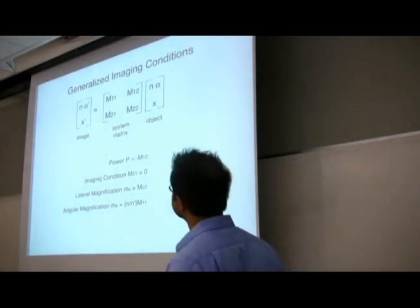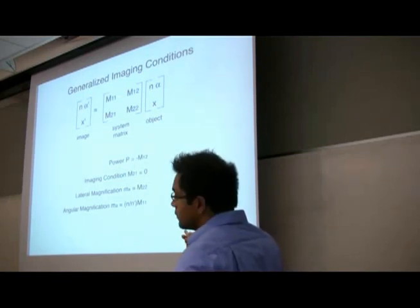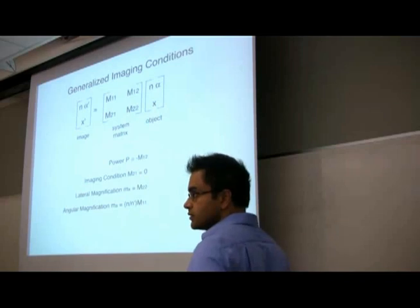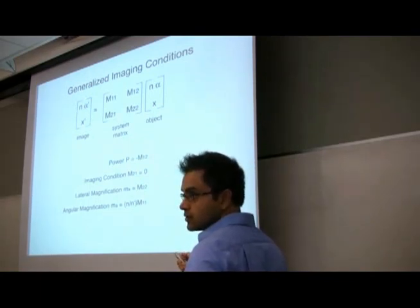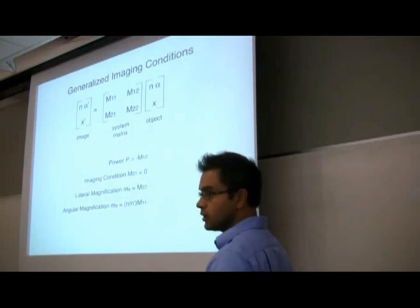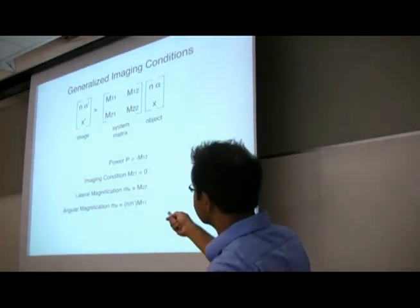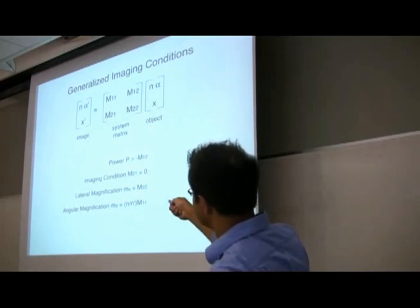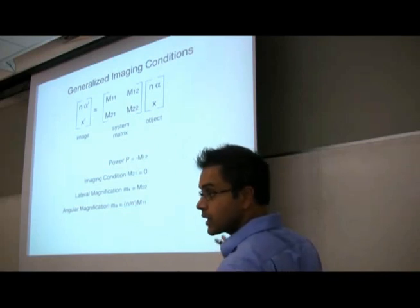To summarize matrix optics: we have the generalized imaging condition and we defined the optical transformation that happens to rays with a simple 2×2 matrix. The image and the object are defined by the angle of the ray and the position of the ray. In ray tracing software, people use millions of rays — you do this operation many, many times, changing the angle and position. The matrix elements M11, M12, M21 define the basic conditions when you're forming an image.